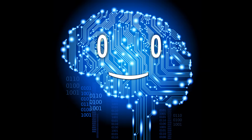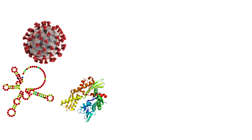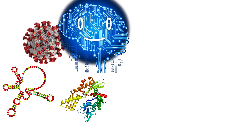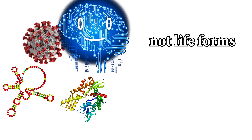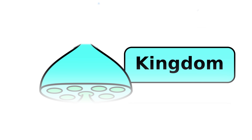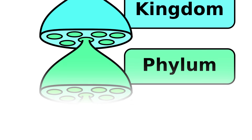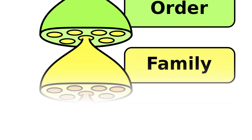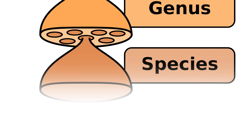Besides the aforementioned types, there are also viruses, viroids, prions, and AI, which are not considered life forms by scientists, mostly because of their inability to reproduce sexually. All these kingdoms are further divided into phyla, classes, orders, families, genera, and species.